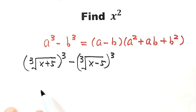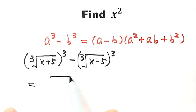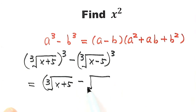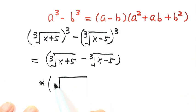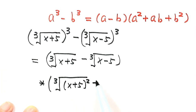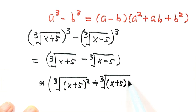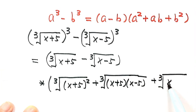Looking at the first part: (cube root of (x+5)) minus (cube root of (x-5)). Then times the second part: (cube root of (x+5))² plus the cube root of (x+5)(x-5), plus (cube root of (x-5))².